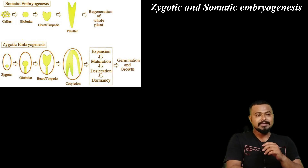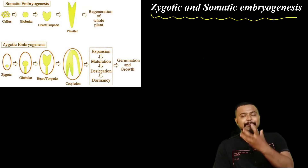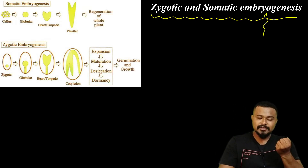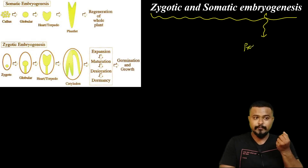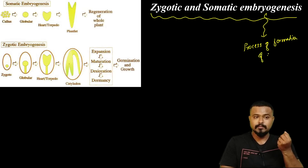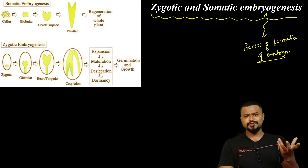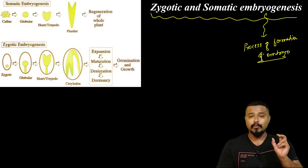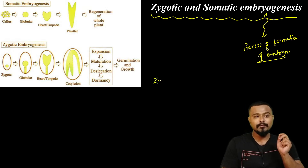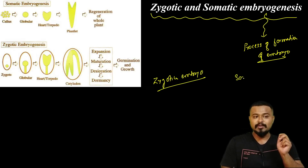Next topic: zygotic and somatic embryogenesis. What do you mean by embryogenesis? The process of formation of an embryo is called embryogenesis. What do you mean by embryogenesis? It involves zygotic embryo and somatic embryo.